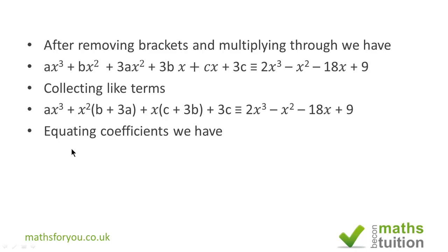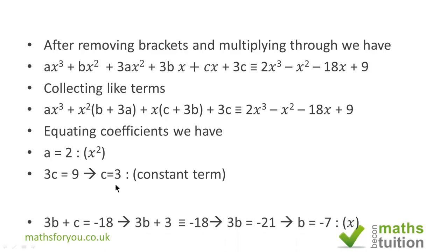We now need to equate the coefficients. So ax³ will be the same as 2x³, so a is 2. For the constant term we know that 3c is equal to 9 which makes c equal to 3, because if you divide 9 by 3 you get 3. That's a constant term.